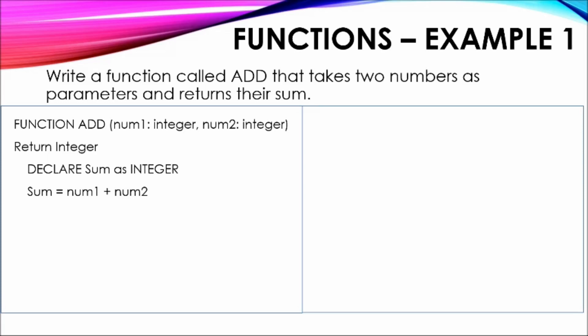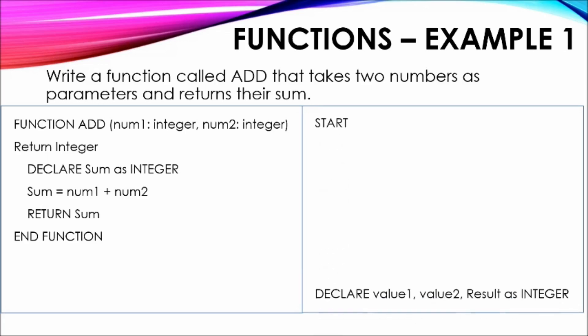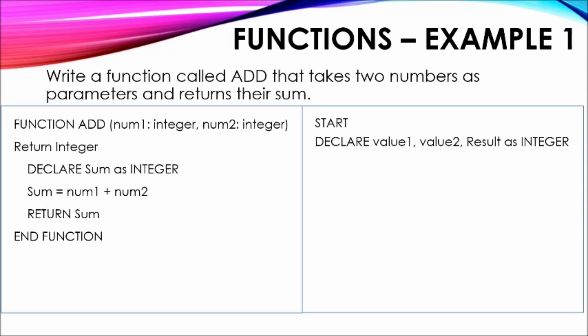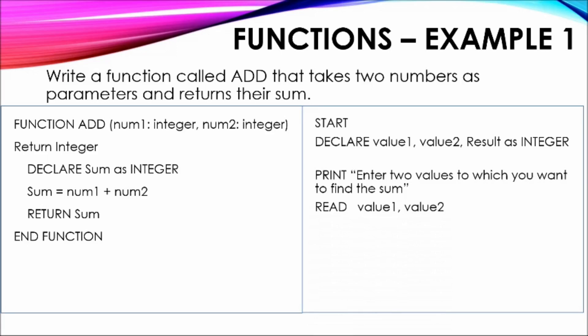The next step shows the calculation of the sum of the values passed to the function. Once done, the function returns the result of this operation. The END FUNCTION keyword shows the termination of the function definition. The main program shows the declaration of variables value1, value2, and result as integer. A prompt and input statement are used to request and accept two values from the user. These values are then passed to the function through the function call, with the variable result used to accept the returned value.